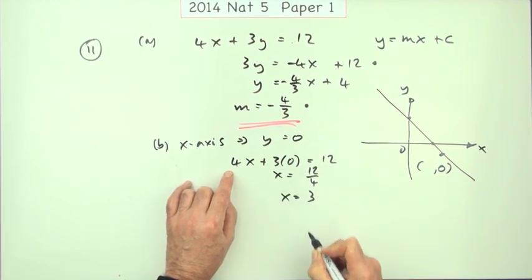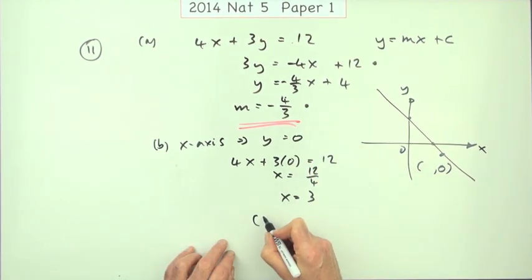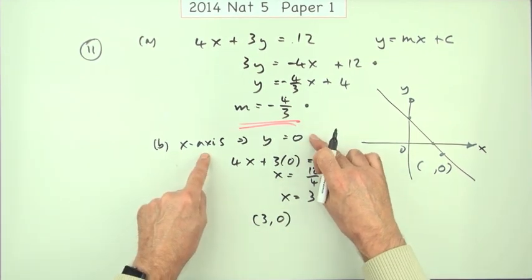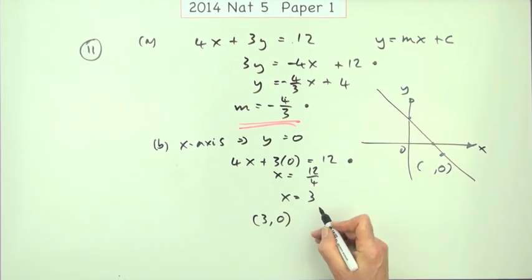So then x is 3. Put them together so it cuts at the point (3, 0). So that'd be the first statement. Knowing that y is zero. So that mark was here. And then finish it off.